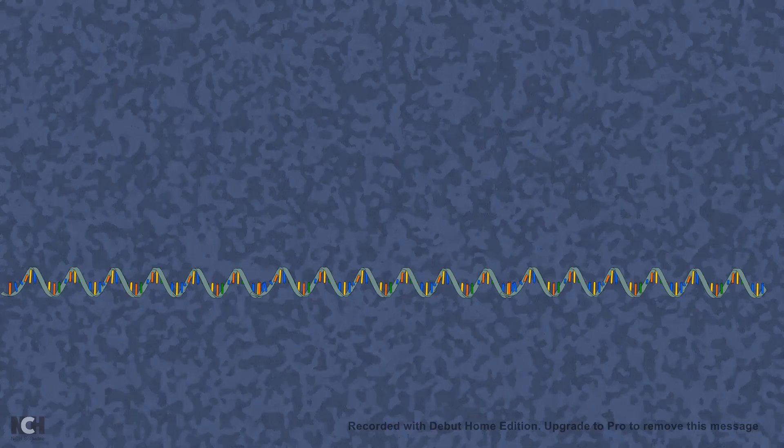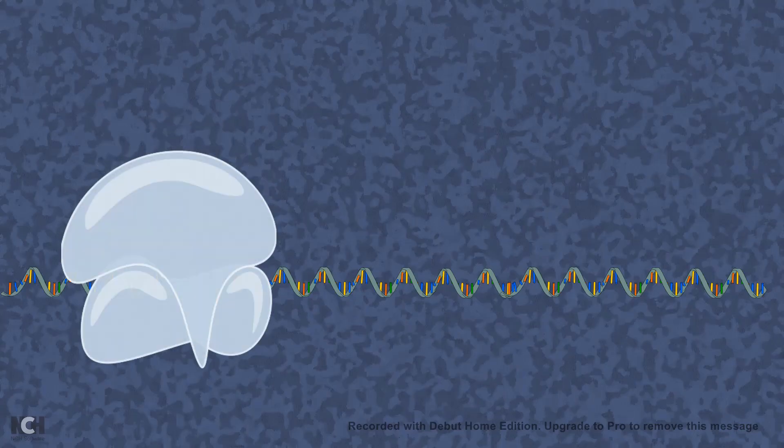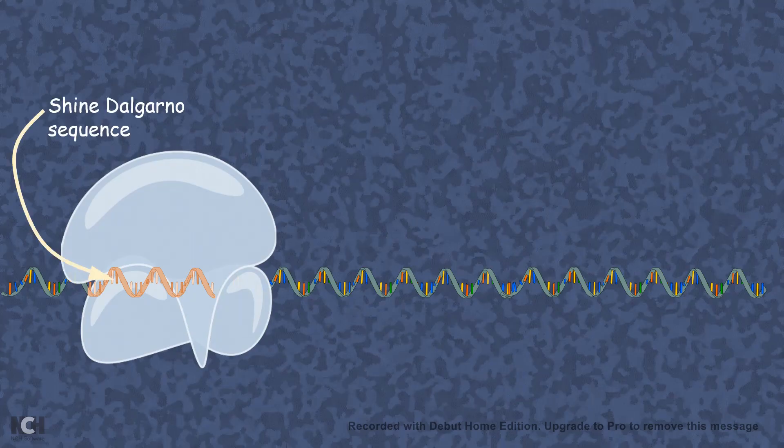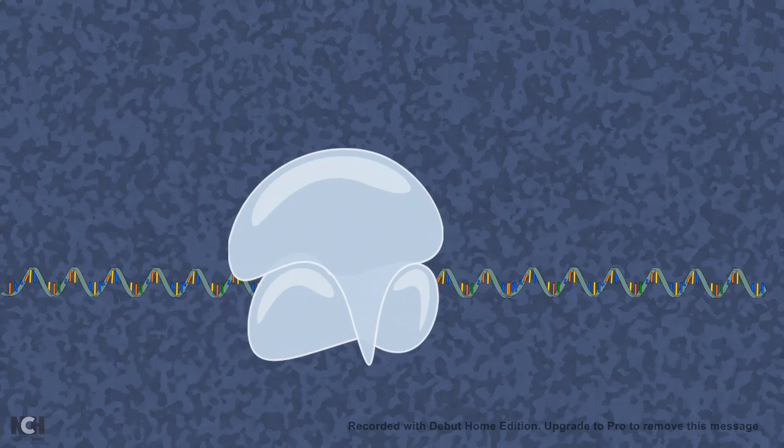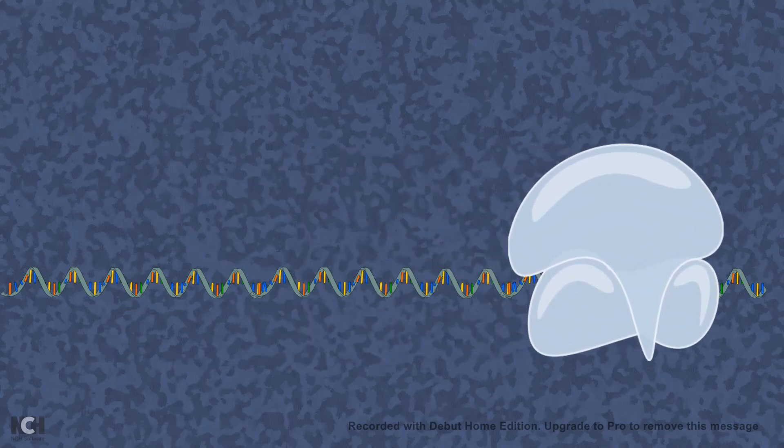Translation begins in a specific sequence known as Shine-Dalgarno sequence. After initiation, the ribosome moves along the RNA, and as it moves along, the amino acids are piled up forming a peptide. This is how protein translation takes place inside a prokaryote and also eukaryote cells.